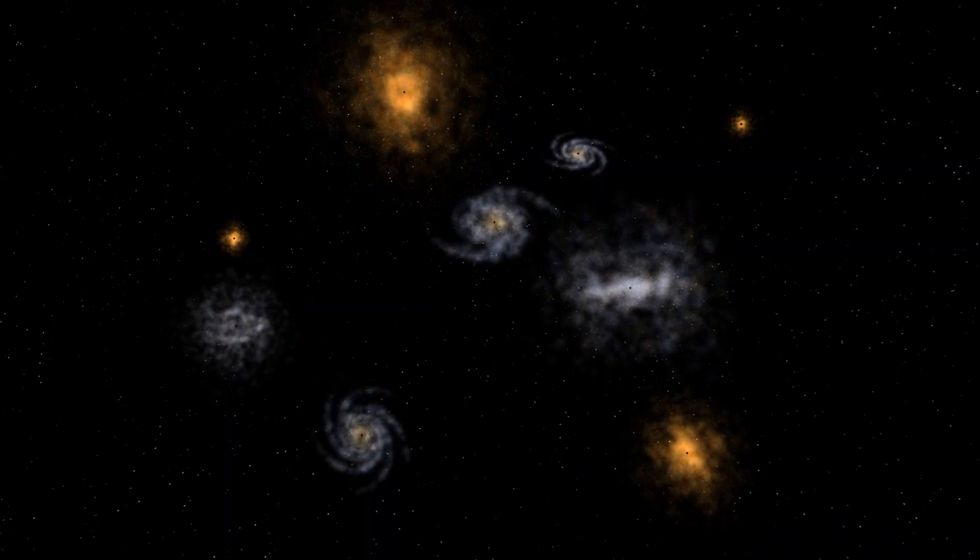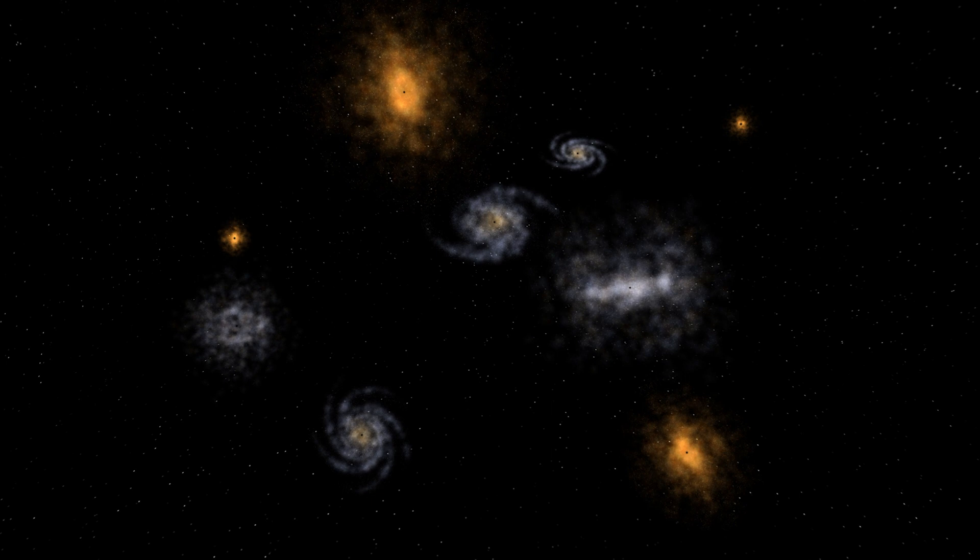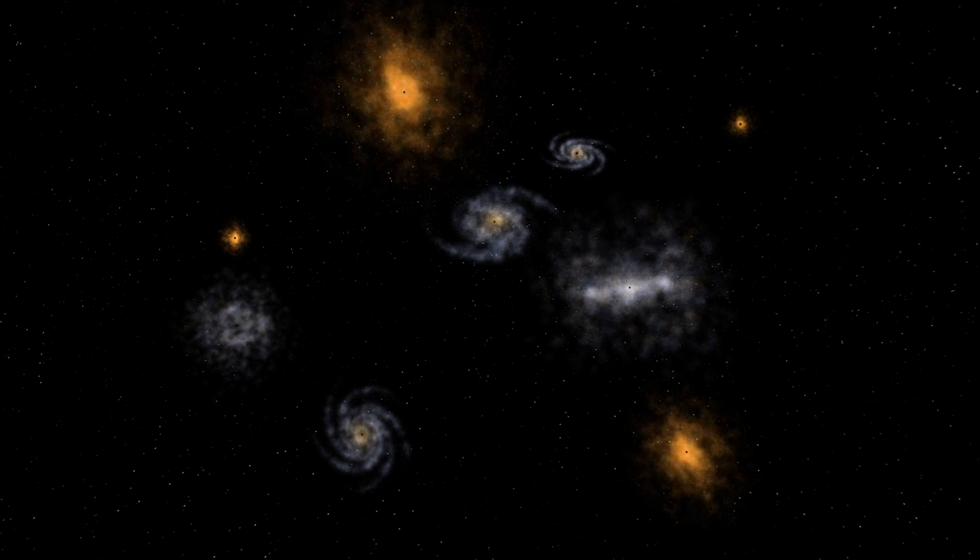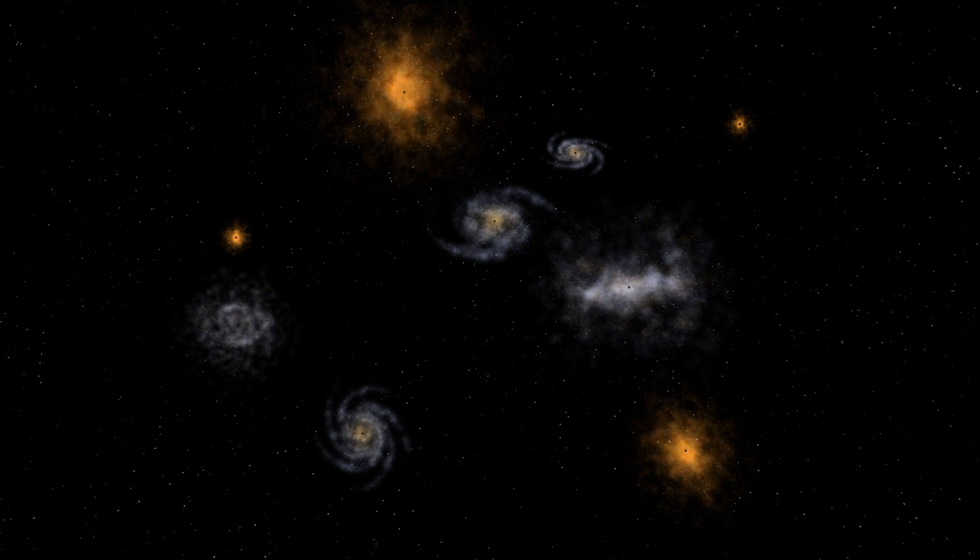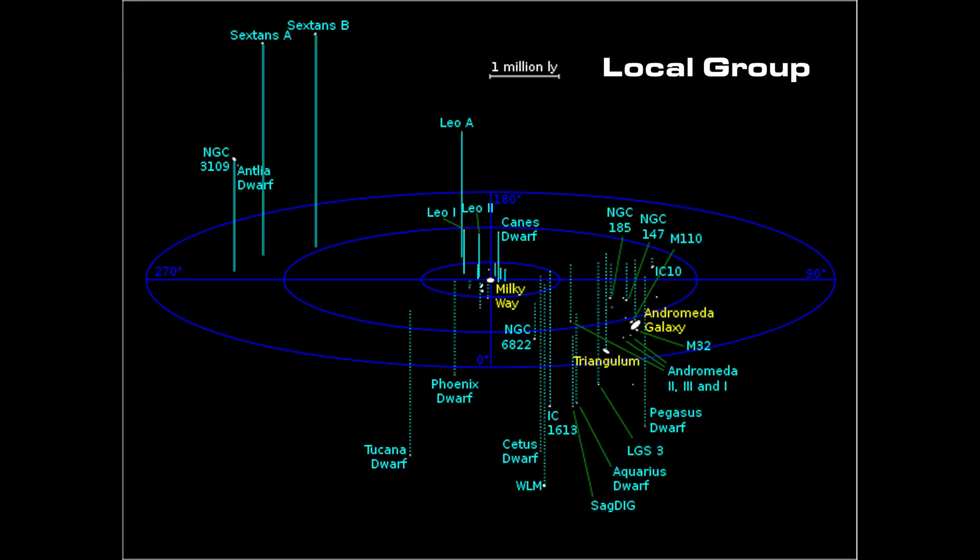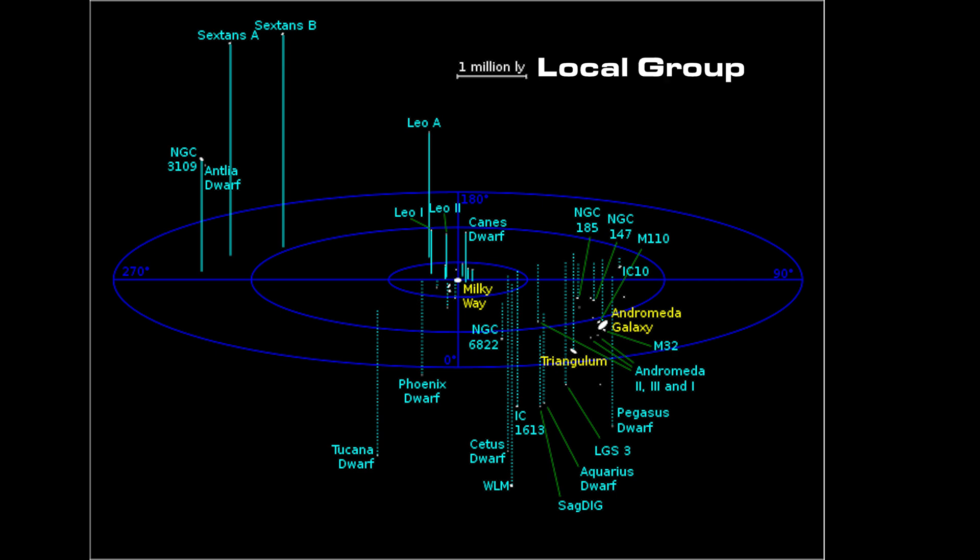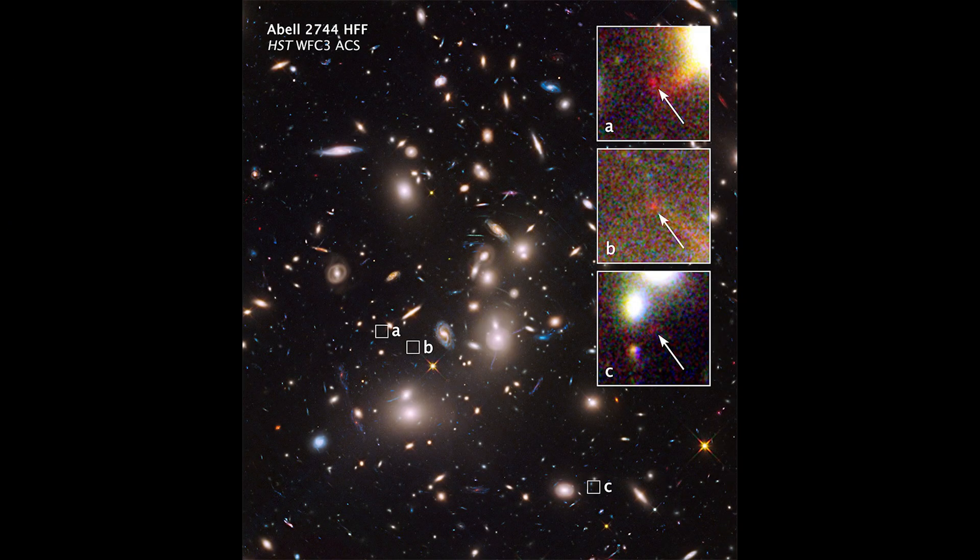You see, galaxies tend to be clustered together in small groups. These groups generally contain 10 to 50 galaxies and span roughly 5 million light years. The Milky Way is part of a group aptly named the Local Group, which contains more than 30 galaxies. These galaxy groups make up structures called galaxy clusters.